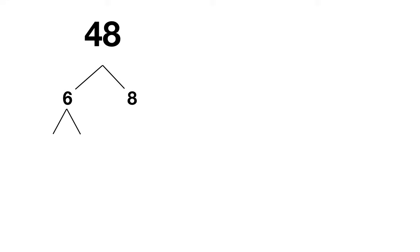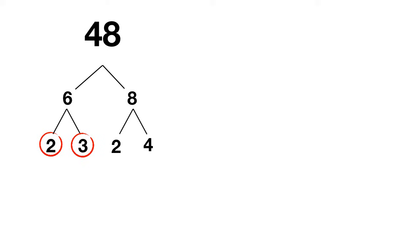6 could be split up into 2 times what? 2 times 3. Are either of these prime numbers? Yes, both 2 and 3 are prime numbers. What can we split 8 into? We can split 8 up into 2 times 4. Well 2 is a prime number, but 4 is not, because it could be split up into 2 times 2. Now both of these are prime numbers, so we can stop.